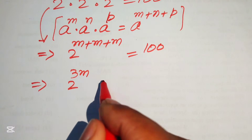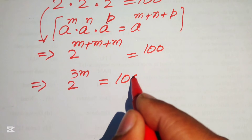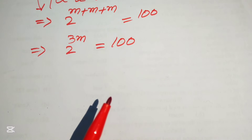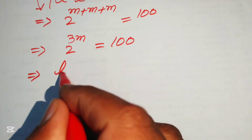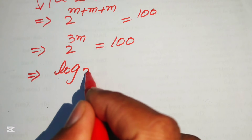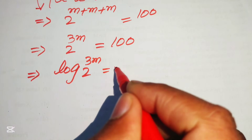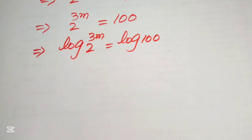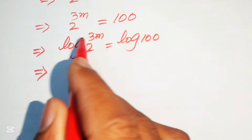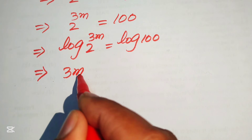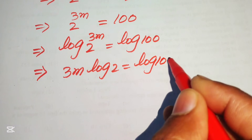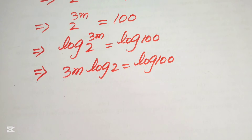Adding those three exponents, we get 2 to the power of 3m equals 200. To move forward, we take the log of both sides, giving log of 2 to the power of 3m equals log of 100. Applying the log power property, we move the 3m to the front: 3m times log 2 equals log of 100.